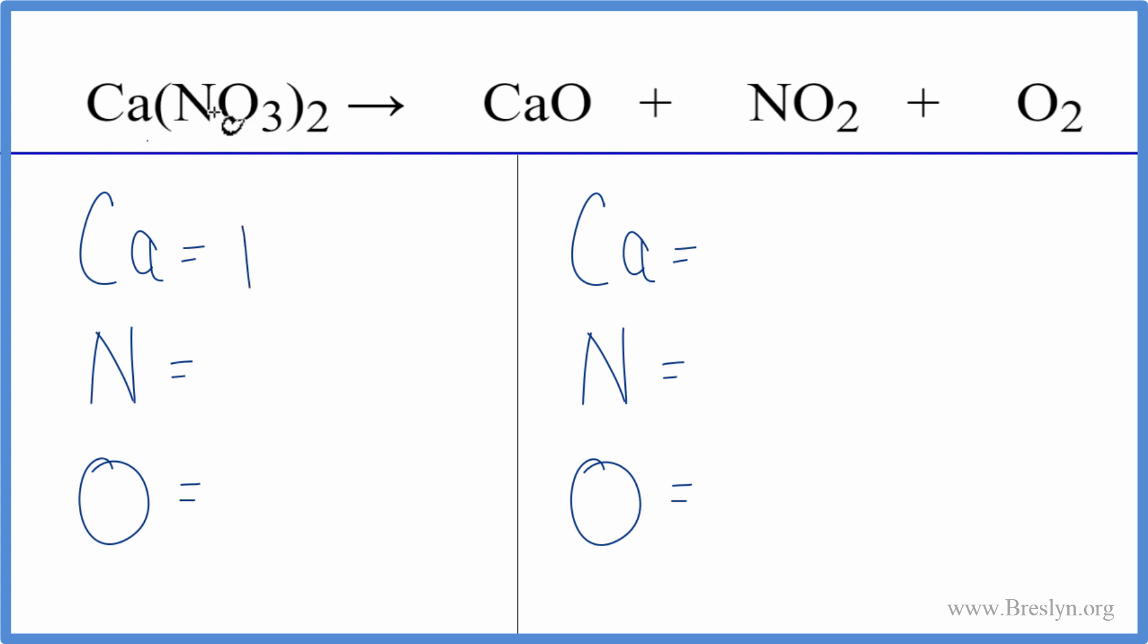So we have one calcium, one nitrogen, and this two we have multiplied everything here by two. So two times the one nitrogen, two nitrogens, two times three, six oxygens.